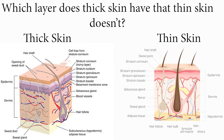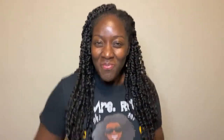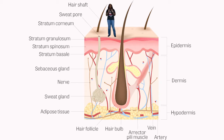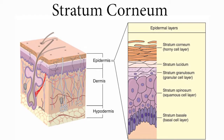Which layer does thick skin have that thin skin doesn't? If you guessed stratum lucidum, you're right. Now let's talk about each epidermal layer from top to bottom. First is the stratum corneum, also known as the horny layer. The stratum corneum is the most superficial layer, so it serves as a barrier from pathogens and water loss. It's also made up of stratified squamous cells — squamous cells are flat and thin.